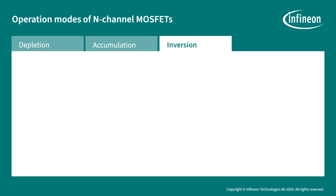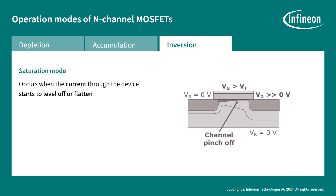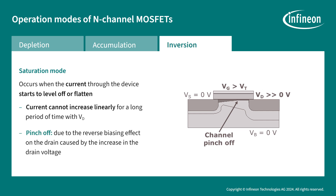The saturation mode occurs when the current through the device starts to level off or flatten. This happens because the current cannot increase linearly for a long period of time with the applied drain voltage. When the drain voltage reaches a value equal to the difference between the gate voltage and the threshold voltage, the conducting channel becomes pinched off and the current will remain constant. This pinch-off occurs due to the reverse biasing effect on the drain terminal caused by the increase in drain voltage.